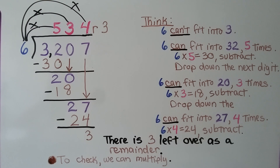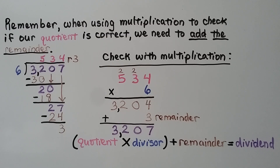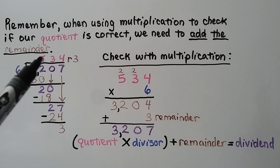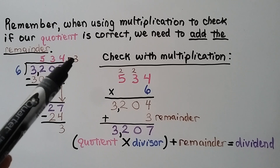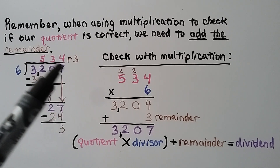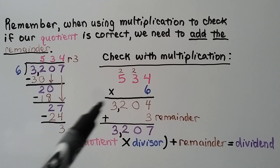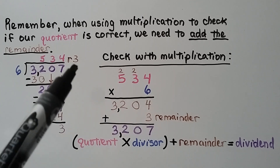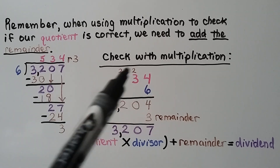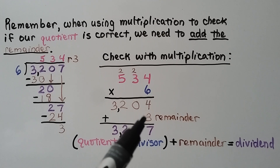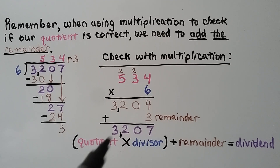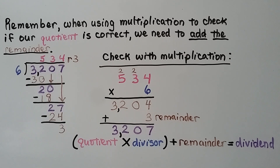And we can check this with multiplication. Remember, when using multiplication to check if our quotient is correct, we need to add the remainder. We had 534 remainder 3 for our answer. To check it, we're going to multiply 534 times 6. We get 3,204. Then, when we're finished multiplying the quotient and the divisor, we add the remainder, and it will equal the dividend if we did our math correctly.